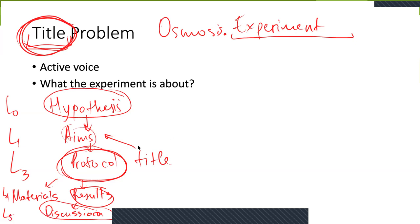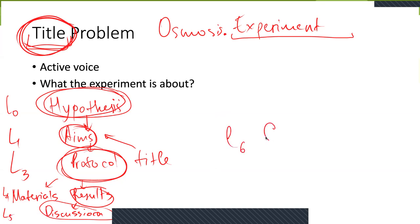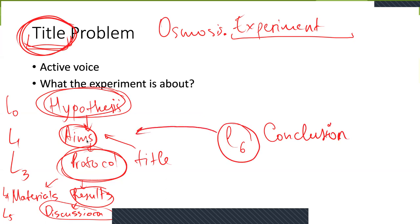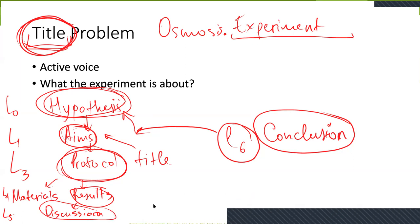Finally, what is the conclusion? The conclusion is actually a comparison of aims and hypothesis to what we actually received in the discussion section — this is level six. Here we compare level six with level one, and through level one we compare it to level zero. This is the end of the whole experiment. The conclusion is dependent on the discussion. This is the dependency tree.